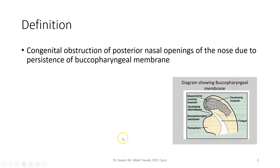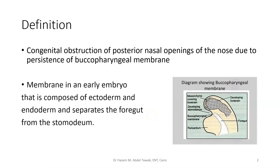It's a congenital obstruction of the posterior nasal openings due to the persistence of the buccopharyngeal membrane. Please look at this picture — it shows what is the buccopharyngeal membrane. It separates the ectoderm outside from the endoderm, and there is a membrane separating the developing stomodium from the foregut. If this membrane persists, the child's nose will become blocked or closed. It is a membrane in the early embryo composed of ectoderm and endoderm, and its persistence will cause the posterior choanal atresia.